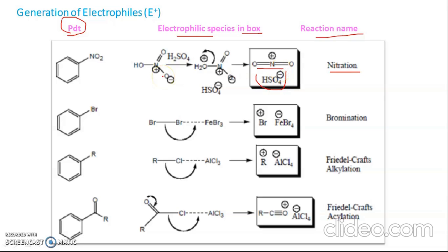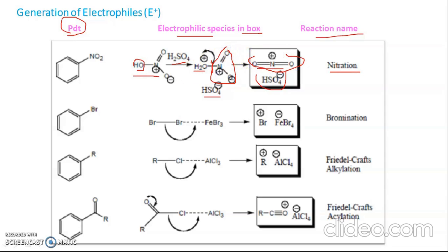Normally in nitration we use a mixture of HNO3 and H2SO4. The nitric acid molecule is protonated by H2SO4, giving HSO4- ion. The OH group becomes protonated, and if this bond is cleaved, we get our electrophile which is NO2+. In case of bromination, the electrophile is Br+.